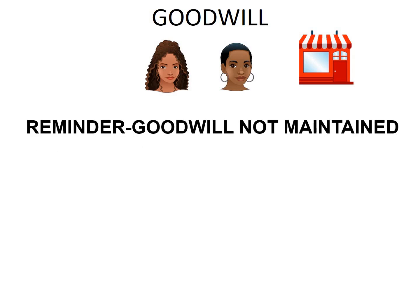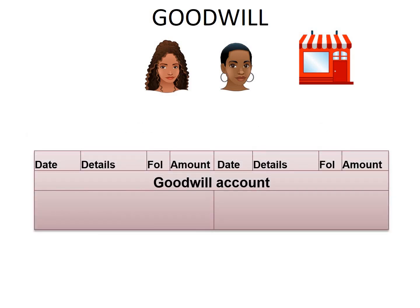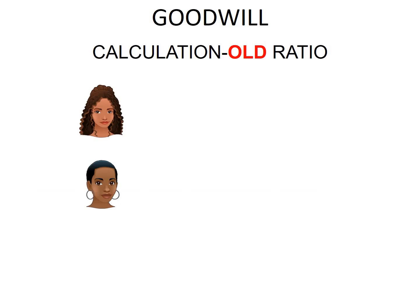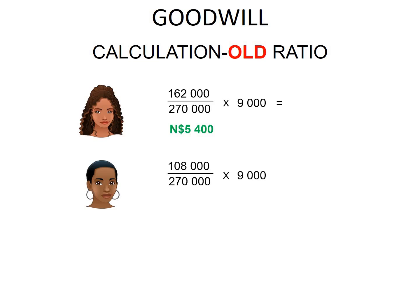As a reminder, the Goodwill account will not be maintained. On the debit side of our Goodwill account, we divide the Goodwill amount in the old ratio, and on the credit side, we divide it in the new ratio. Calculating the old ratio: Daisy's capital balance is $162,000 over a total of $270,000, multiplied by the Goodwill amount of $9,000, which gives $5,400 for Daisy. Anna's capital balance is $108,000 over $270,000, multiplied by $9,000, which gives $3,600.